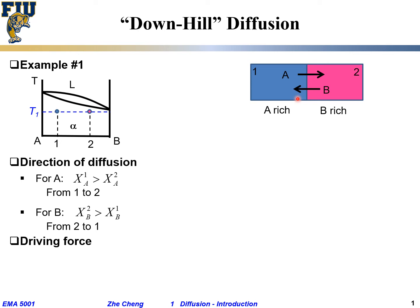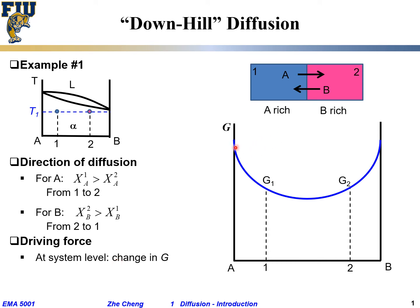Any process is driven, from a thermodynamics point of view, by a so-called driving force. At the system level, that driving force is the change in free energy — specifically the lowering or reduction of Gibbs free energy. We plot the Gibbs free energy for the system from pure A to pure B. The typical curve at a temperature below the solidus line looks like this. Piece one corresponds to the molar Gibbs free energy G1, and piece two corresponds to G2.